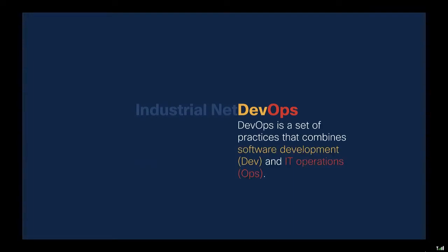Before starting with Industrial NetDevOps, let's start with DevOps. DevOps is a set of practices that combines software development — DEV — and IT operations — OPS. If you're a software developer, you need the right production and testing environments, and requirements for the network and applications. The IT operations team, the OPS guys, are here to help. These DevOps tools and principles, now getting more mature, are moving into the industrial world.